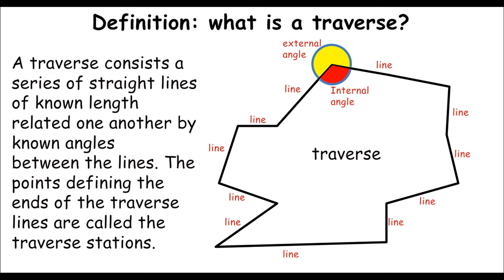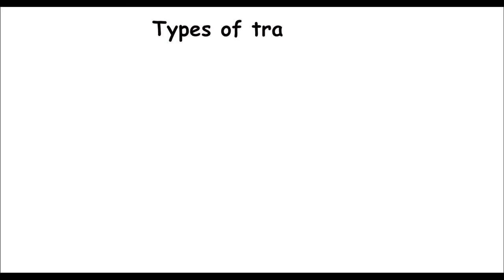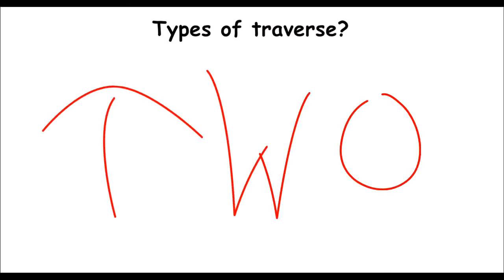In short form, we can say a geometric shape is a traverse which can be used for the purpose of surveying. Now let's go ahead for the types of traverse. We have only two types of traverse.